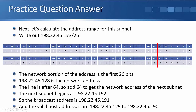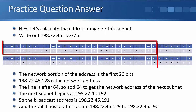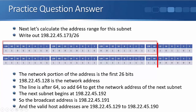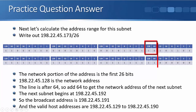The network portion of the address is the first 26 bits. So I can see that is 198.22.45, and then I count whatever is in the first two bits of the last octet. I've got a 1 for the 128 and a 0 for the 64, so that means it's 128. The network address is 198.22.45.128.